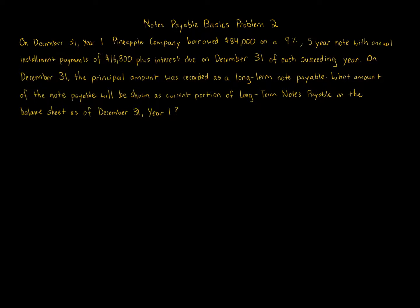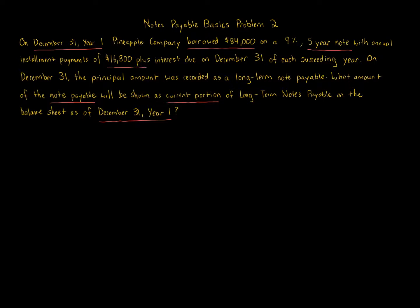The question is specifically asking: what amount of the note payable will be shown as a current portion of the long-term notes payable on the balance sheet as of December 31st, Year 1? On that date, the company borrowed $84,000. The note matures over five years, with installment payments of $16,800 plus interest due on each December 31st of each succeeding year.